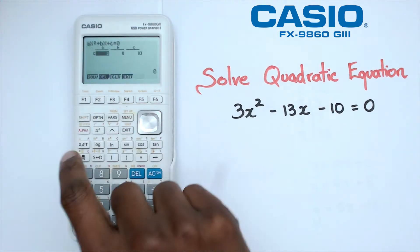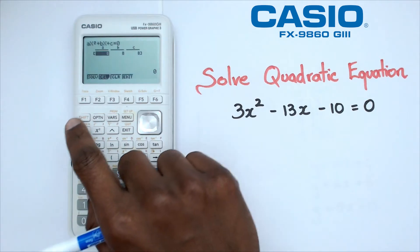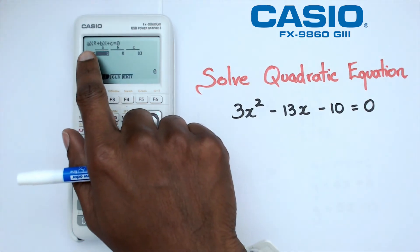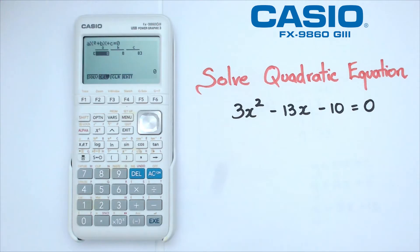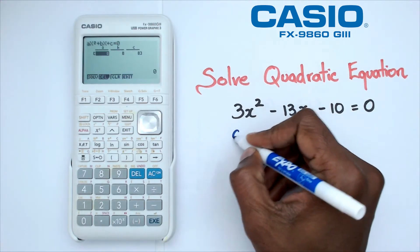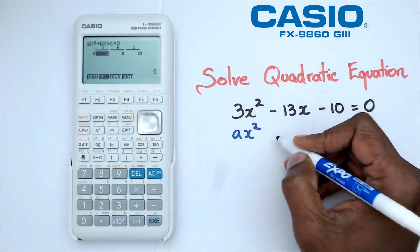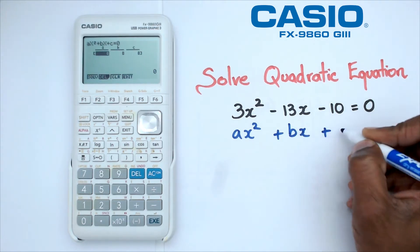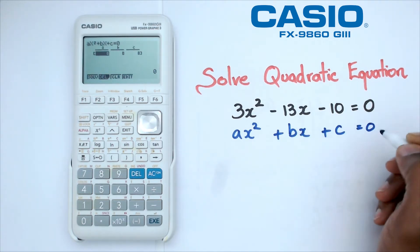So we're going to click on F1 and now we need to press in ABC. Now if you notice the equation here, it's ax squared plus bx plus c. So basically we've got ax squared plus bx plus c equals to 0.